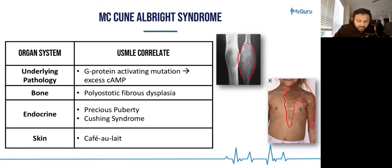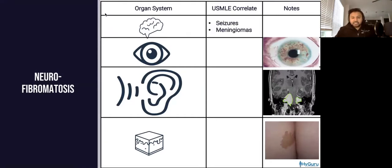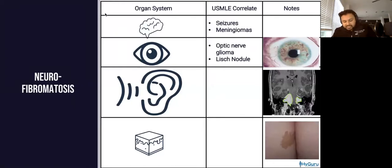Speaking of café au lait spots, let's integrate neurofibromatosis. In neurofibromatosis, you're going to have a correlate to the brain being seizures and meningiomas. Remember that the eyes in neurofibromatosis — you're going to have these Lisch nodules, which are speckled portions of the iris.